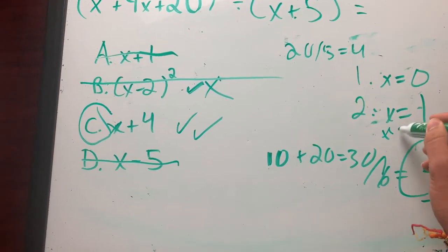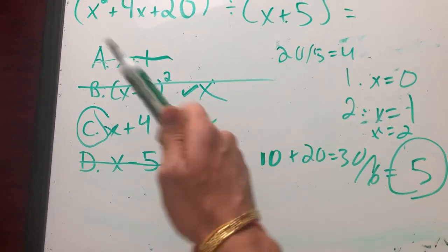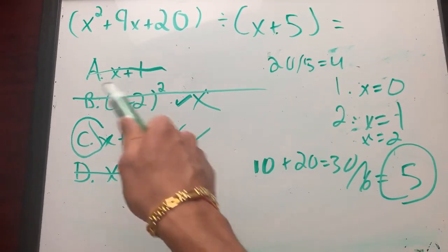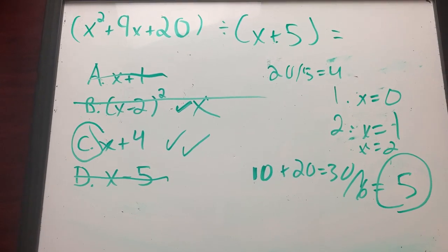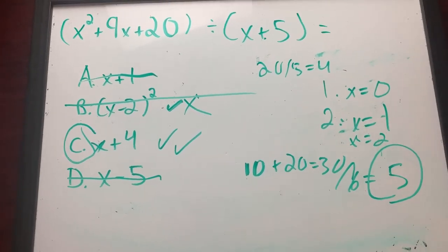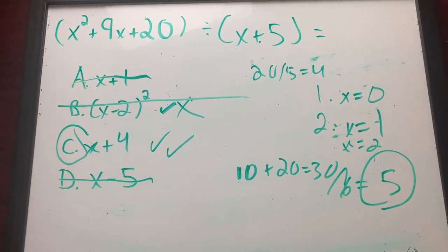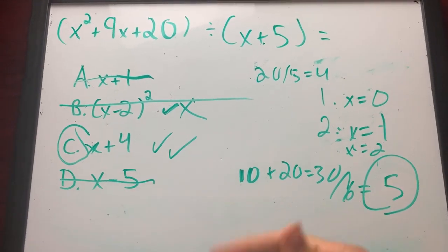And you can keep going to x equals two, x equals three, until you only have one choice left. And all you have to do is select that choice as your answer and you can move on. That's it. That's how you solve these super hard division problems. You do not need to learn long division for the SAT. You can just do this and you're done. So thank you guys for watching.